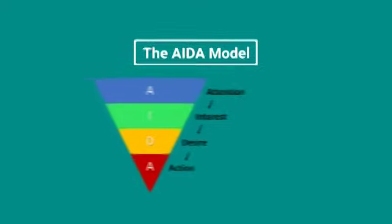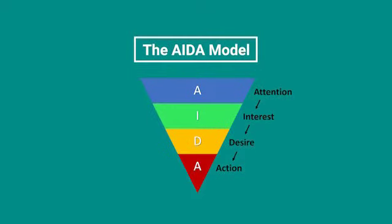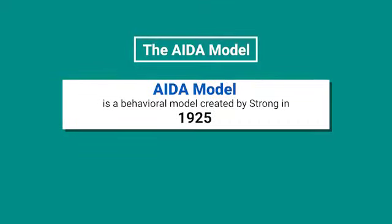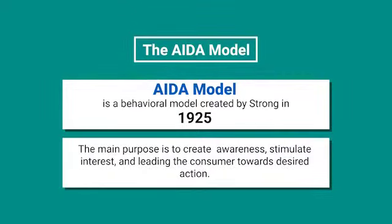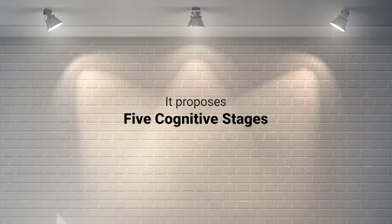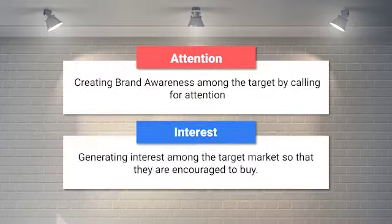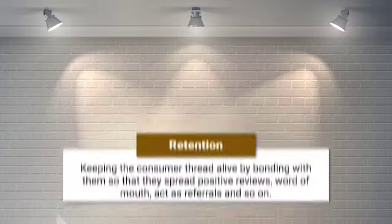To start with advertising models, the first is the AIDA model. The AIDA model stands for Attention, Interest, Desire, and Action. It is a behavioral model created by Strong in 1925. Its main purpose was to create awareness, stimulate interest, and lead the consumer towards a desired action. It proposes five cognitive stages: attention, interest, desire, action, and retention.